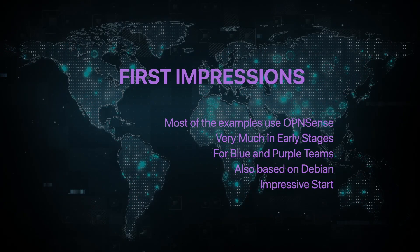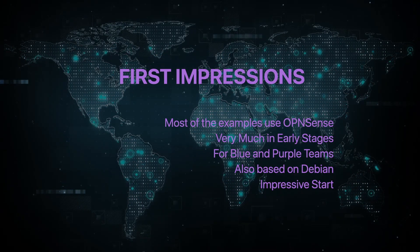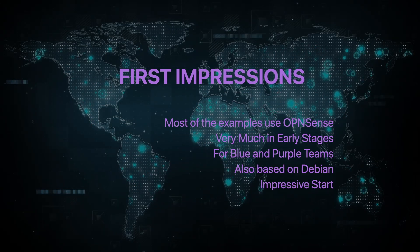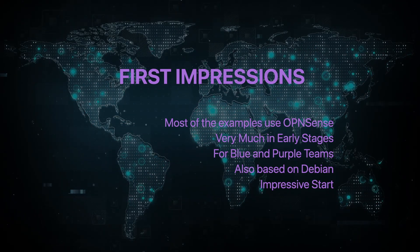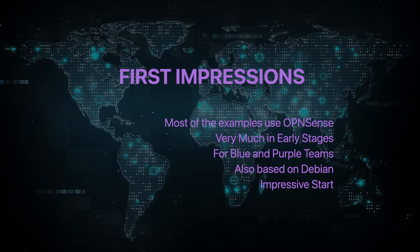I did notice that a lot of the examples in Kali Purple at this point use OPNsense. I was like, why don't they have pfSense? I saw some mention of pfSense — I'm not saying you can't look at the OPNsense examples and translate that to pfSense, I'm just not quite sure what's going on there. It's too early to really make comments like that just yet.